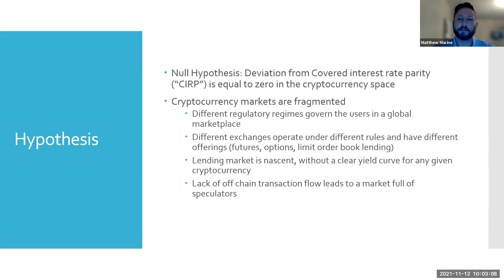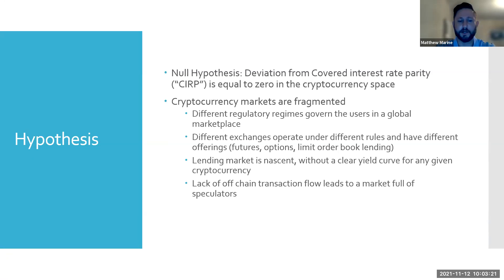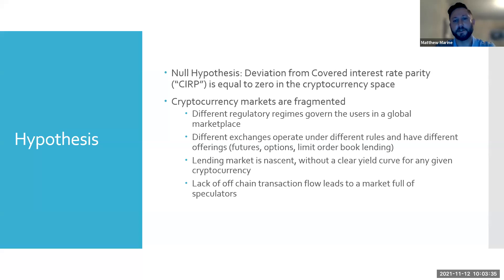A big factor is that the lending market is nascent — there's no clear yield curve for any specific currency, which in my opinion is a necessary condition for covered interest rate parity to hold. The lending market is growing and changing from a technology perspective. On Bitfinex, which is the exchange I used to pull the lending data, it actually has a limit order book, so there's a lot of variation, and very few real term lending instruments where you'd set, say, a month-long loan.